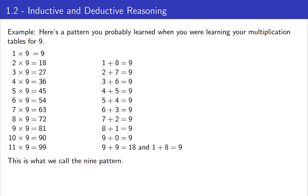You've probably seen this particular pattern when looking at your nines table. There's a little trick you can do with your hands where you put down one finger and it tells you the answer when you multiply that particular number by nine. The reason this works is because of this nine pattern.